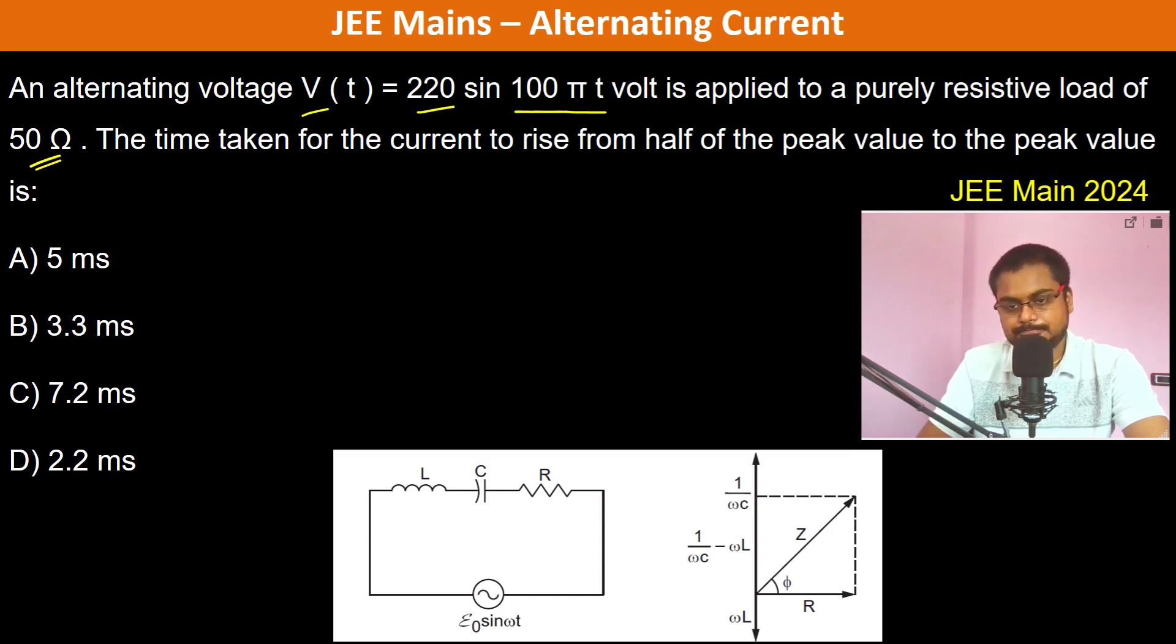Since it is purely resistive, we can very easily write I = V/R which is 220 divided by 50, and this is sin(100πt).